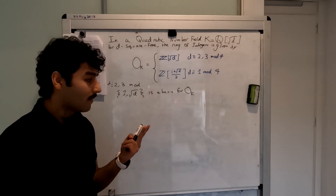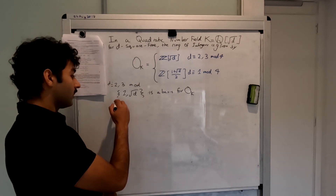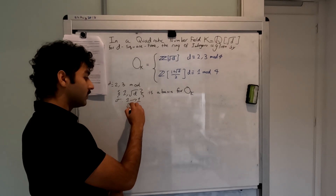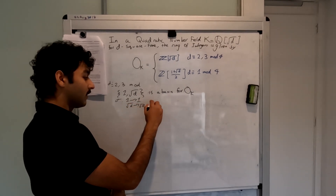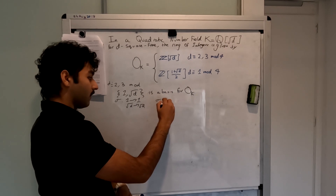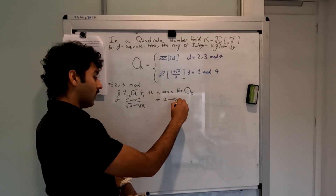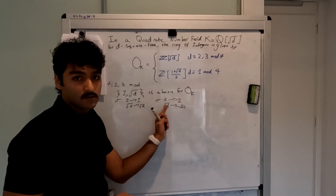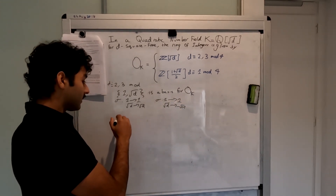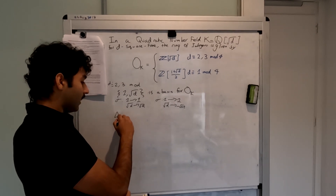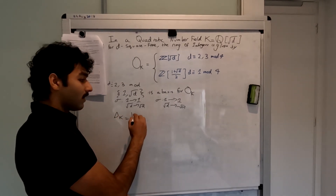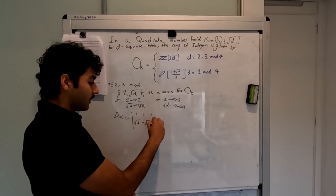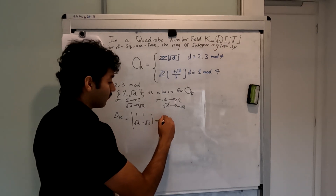Thus we have two embeddings from k to the algebraic closure of Q: the identity, sending 1 to 1 and √d to √d, and its Galois conjugate, sending 1 to 1 and √d to −√d. In this case, we see that the discriminant Δ_k is the determinant squared of the matrix [[1, 1], [√d, −√d]], which equals (−2√d) squared, which is 4d.